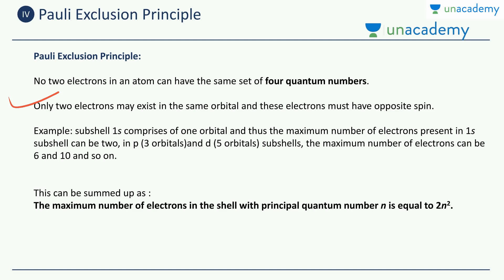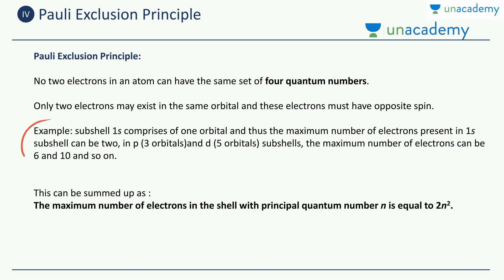Only two electrons may exist in the same orbital — a maximum of two. These two electrons must have opposite spins: clockwise and anticlockwise. For example, the 1s subshell comprises only one orbital, and the maximum number of electrons in the 1s subshell is two, since each orbital can have a maximum of two electrons.